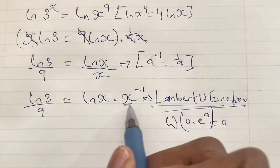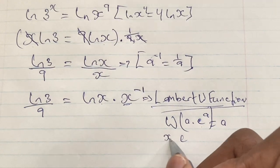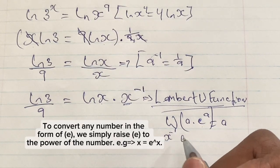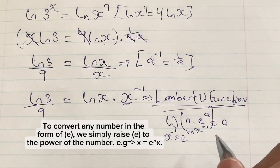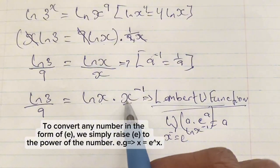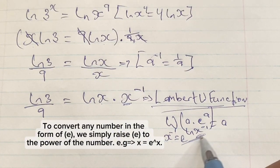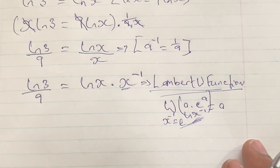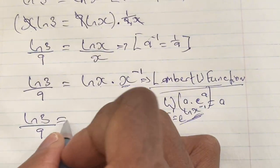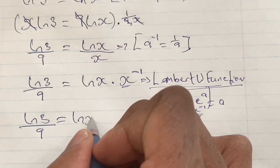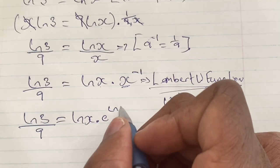Here, ln x will represent a, and we need to convert x to the power of negative 1 into the form of e. To convert any number into e form, we say x to the power of negative 1 is equal to e to the power of ln x to the power of negative 1. So we rewrite our equation as: ln 3 over 9 is equal to ln x times e to the power of ln x to the power of negative 1.